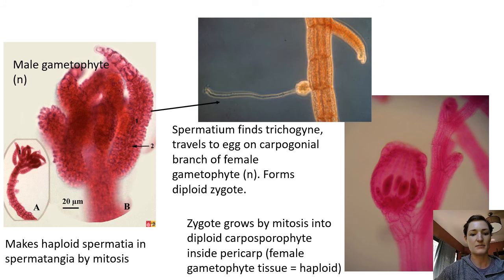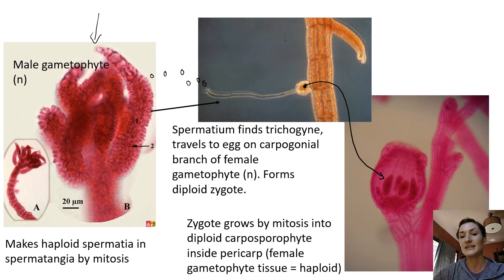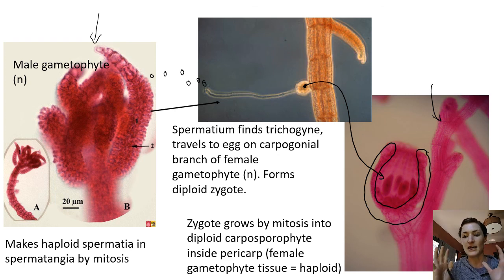We have our gametophyte. There's the male gametophyte right here making spermatangia at the end of those branches. Each spermatangium is going to make a bunch of spermatia, and those spermatia will be released into the water. Hopefully somewhere in that big ocean one will find a trichogyne and fuse with it. The nucleus will travel down and fertilize the egg, which would be here at the base of that carpagonial branch. That will then grow by mitosis into the carposporophyte, which is inside the female gametophyte tissue. This is our female gametophyte still here. We have made this structure around it called the cystocarp, which we'll see in lab. The outside is the pericarp, which is haploid because it's still part of the female gametophyte. All the tissue inside that is diploid because it grew from that zygote. We have the carposporophyte here and the carposporangia here.